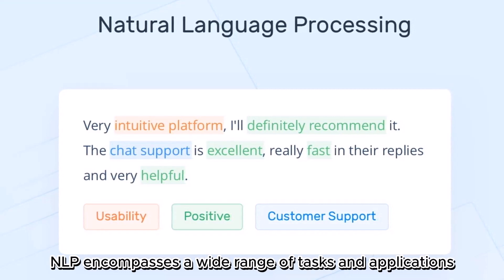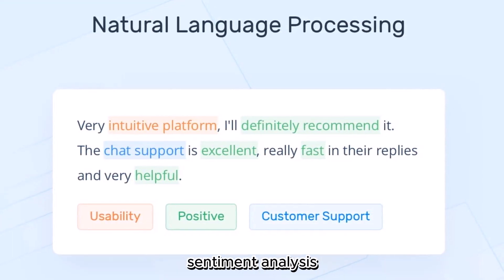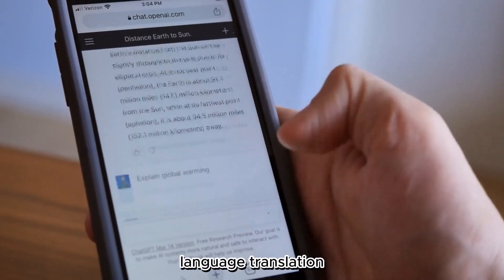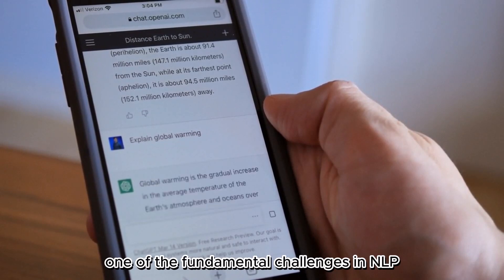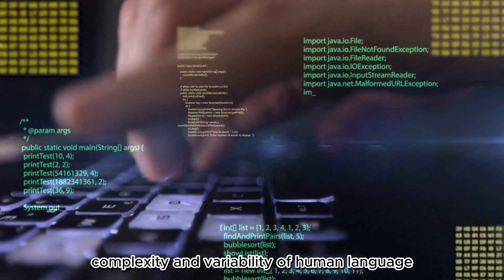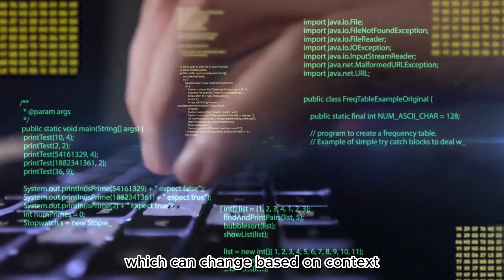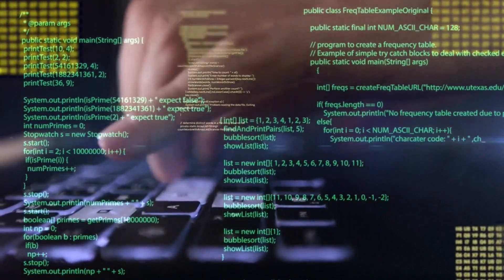NLP encompasses a wide range of tasks and applications, including text parsing, sentiment analysis, language translation, speech recognition, and question-answering systems. One of the fundamental challenges in NLP is dealing with the inherent ambiguity, complexity, and variability of human language, which can change based on context, dialect, and individual preferences. Number 7.